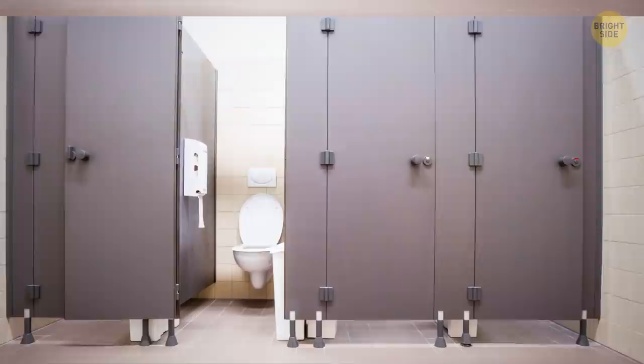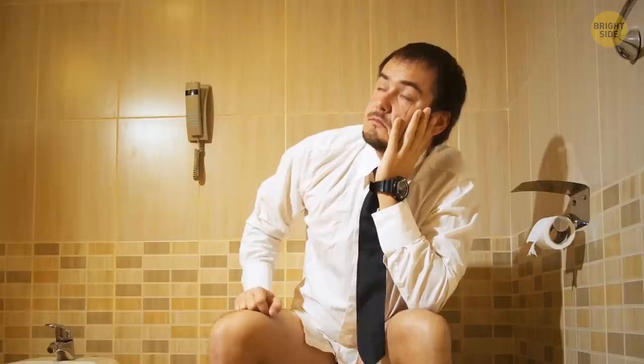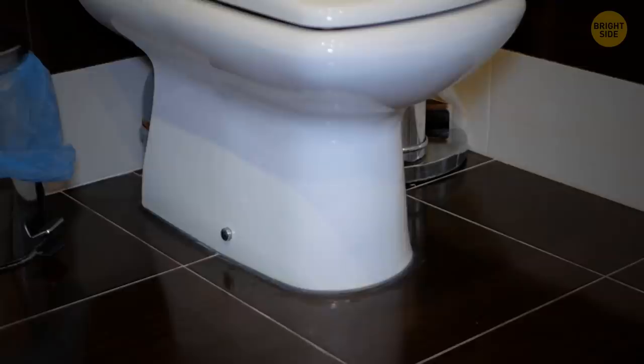Speaking of restrooms, almost any public toilet has a large gap between the floor and the door. The reason for such a zero-privacy thing is to actually minimize the level of privacy and comfort so that people won't stay there long and there'd be no lines. It's also easier to clean and safer if some emergency occurs.